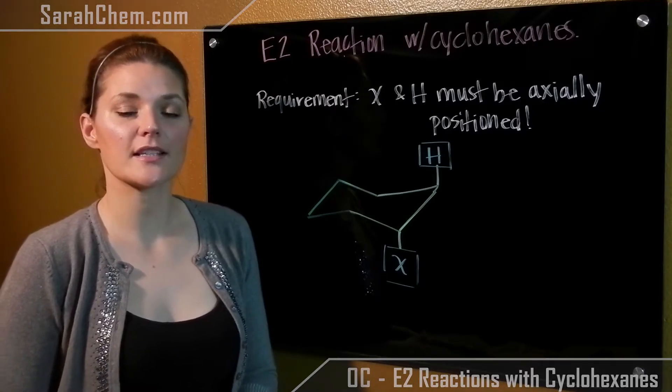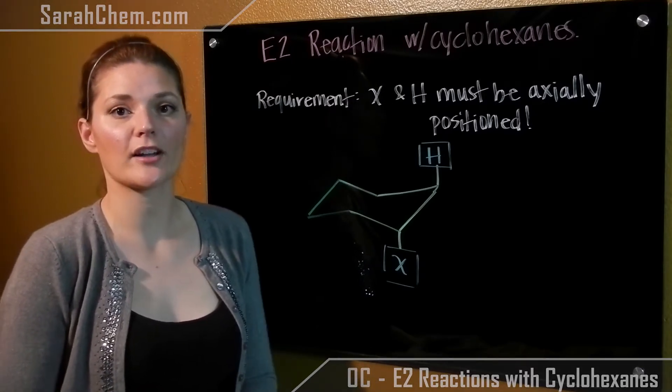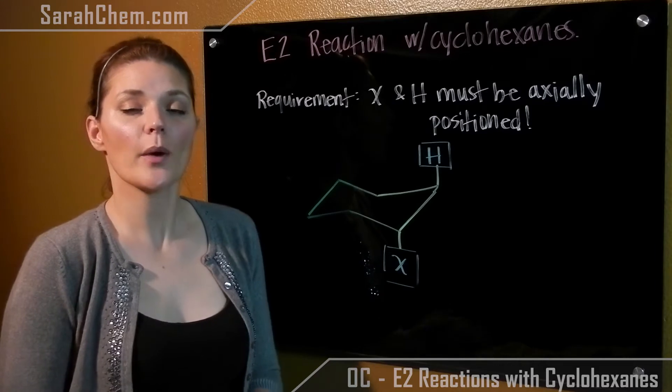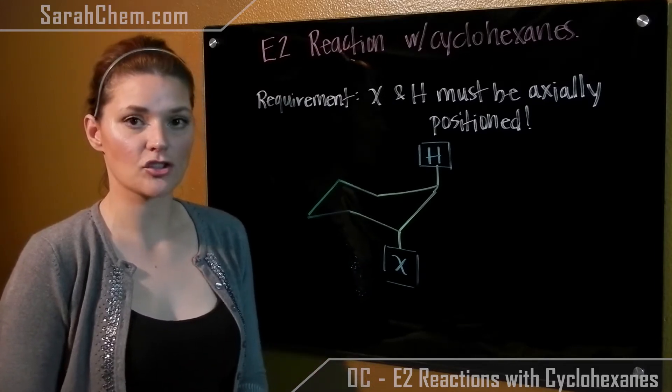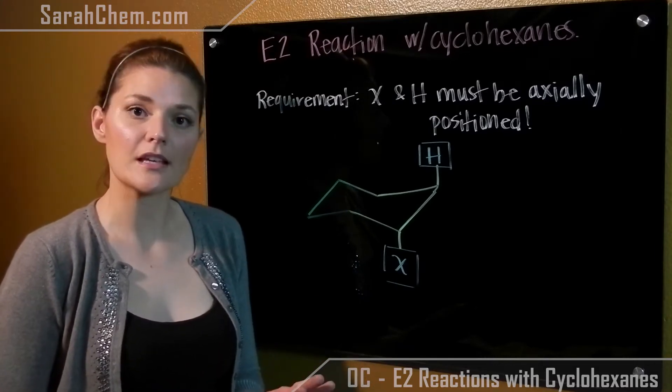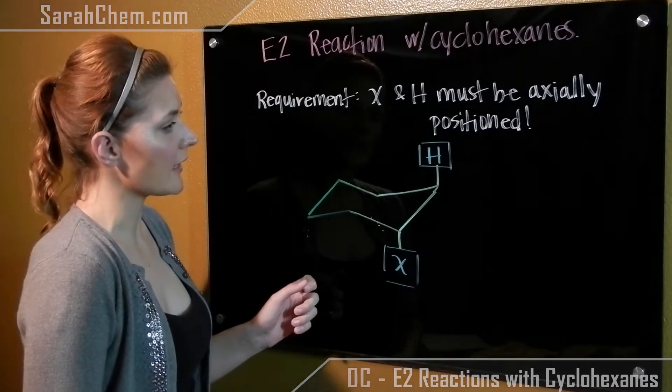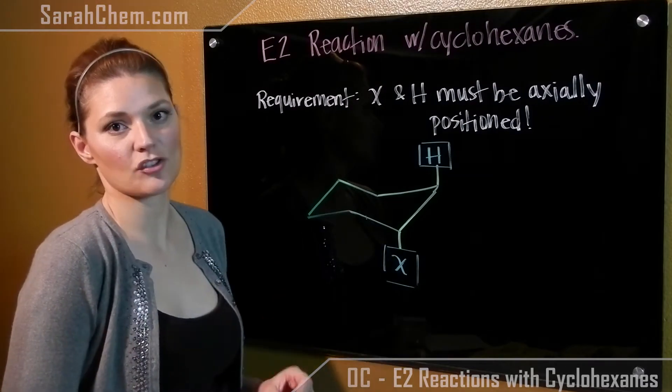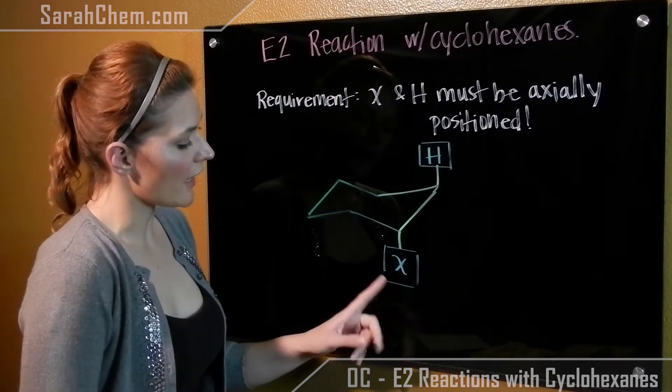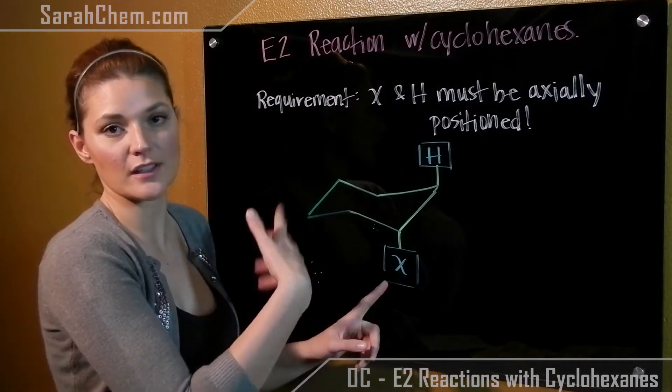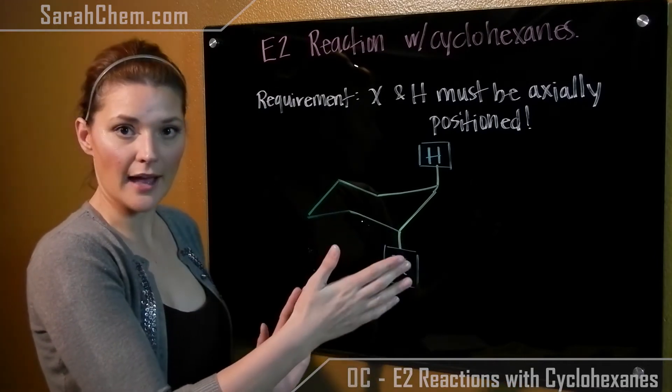The first thing you have to understand is when we have an E2 reaction, because it's concerted, you have to have a particular orientation for the H group that's leaving and for the halogen group that's leaving. When we're talking about a cyclohexane, they have to be axially positioned to one another. So you have to have the X and the beta H that's leaving both be in the axial positions.